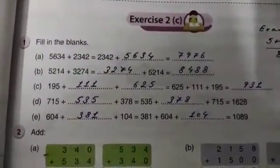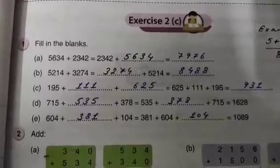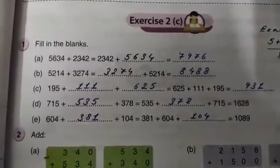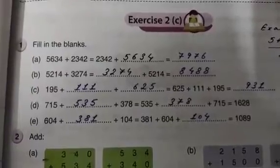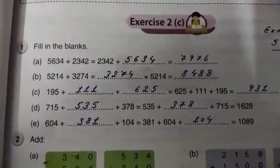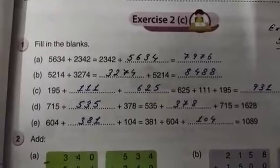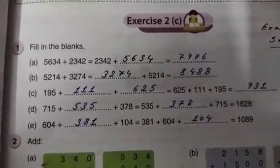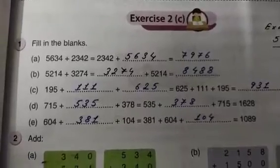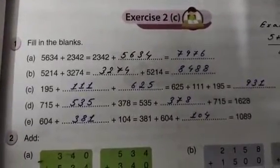Next one. 5,214 plus 3,274. Now, at first, I am bringing 3,274 in the blank. And then, 5,214 will go. And then, you add up and see. You can add up both and see to check yourself. 8,488 will be your answer.